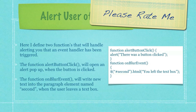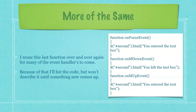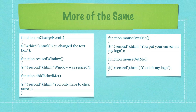Here, I define two functions that will handle alerting you that an event handler has been triggered. The function alert_button_click will open an alert pop-up when the button is clicked. The function on_blur_event will write new text into the paragraph element named second when the user leaves a text box. I reuse this last function over and over again for many of the event handlers to come, so I'll list the code but won't describe it until something new comes up. I'm running pretty much identically the same code, posting text to either the paragraph named third or the paragraph named second.